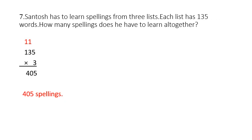Next question, Question number 7. Santosh has to learn spellings from 3 lists. Each list has 135 words. How many spellings does he have to learn altogether? Children, number of lists is 3 and each list has 135 words. So you have to find out the total number of spellings in 3 lists. Here we multiply 135 by 3.